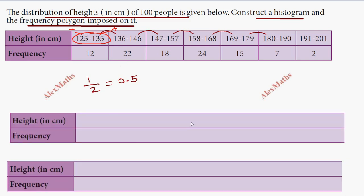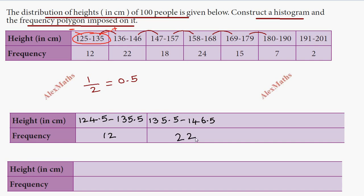Now we rewrite the table with continuous class intervals. The first class starts at 125 minus 0.5, which is 124.5, and goes up to 135.5. The next interval is 135.5 to 146.5 with frequency 22, then 146.5 to 157.5 with frequency 18, and 157.5 to 168.5 with frequency 15.